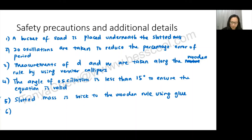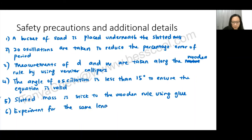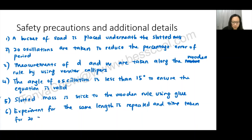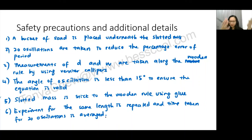A sixth detail: the experiment for the same length L is repeated, and the time taken for 20 oscillations is averaged. Repeating twice and averaging ensures more reliable results. That gives six points for safety precautions and additional details.